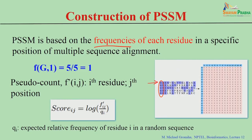Taking position number 1: what is the probability of having G at position 1? There are 5 sequences and all 5 have glycine at that position, so the frequency is 5/5 = 1. Likewise, the frequency of glycine at position number 4 is 2/5 = 0.4. Now we assign the 20 different amino acid residues at each position.